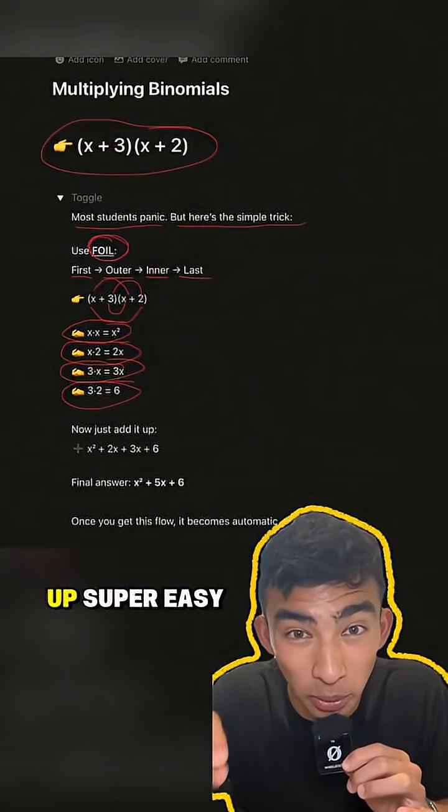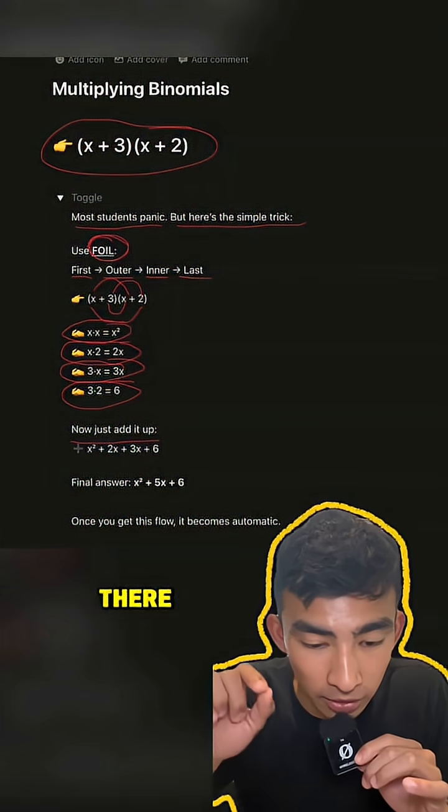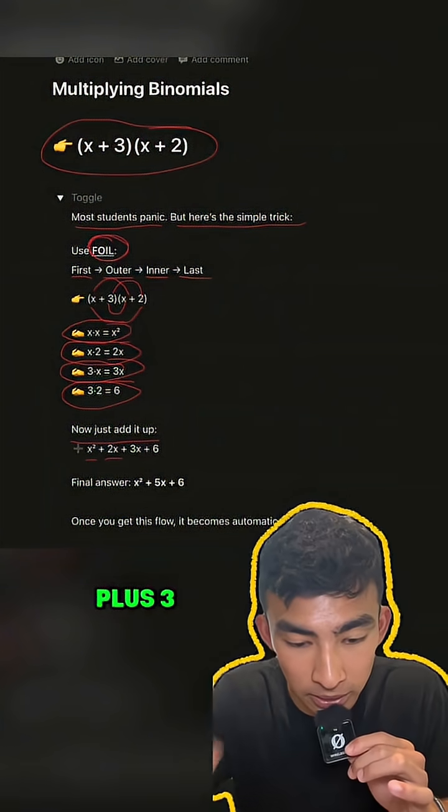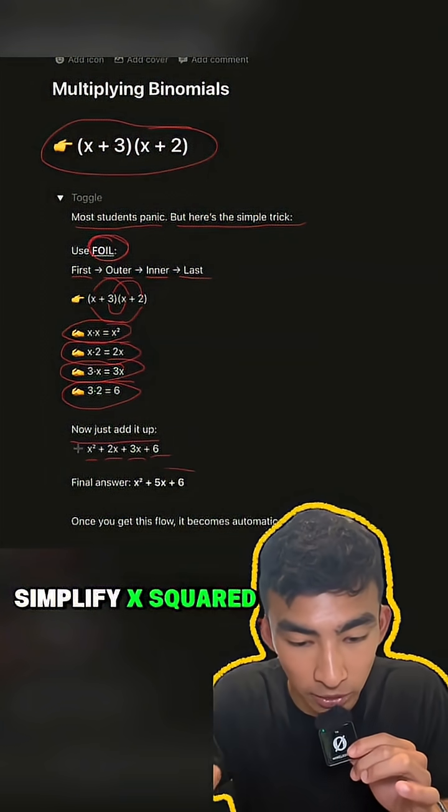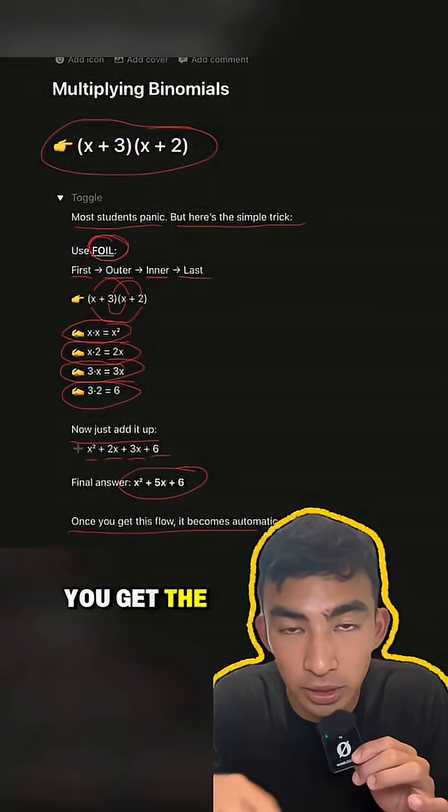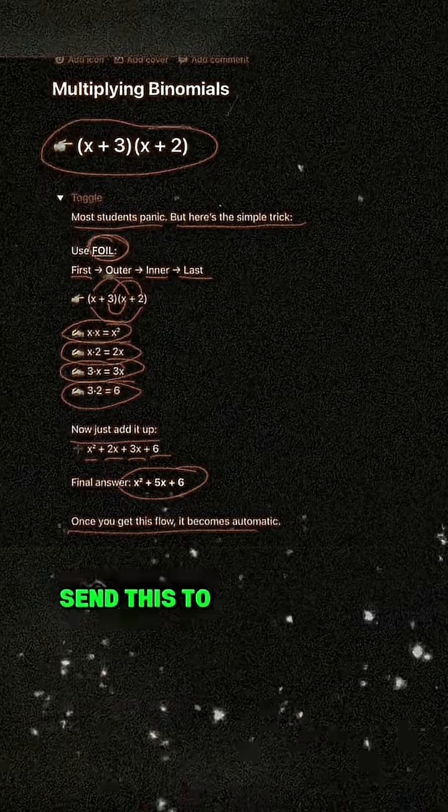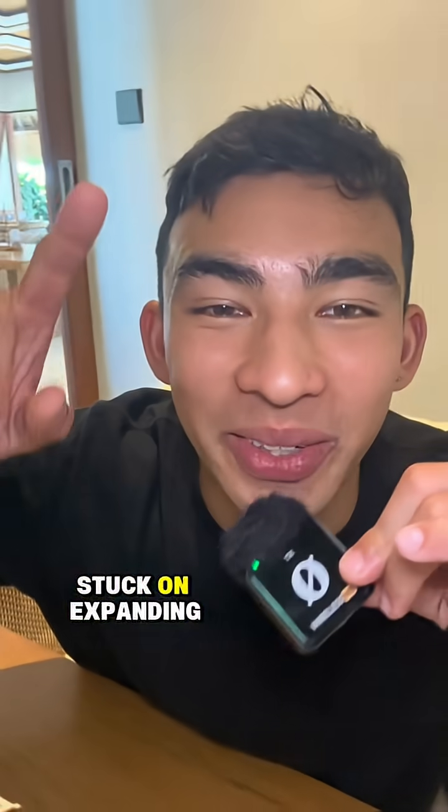Then we just add it all up super easy here. That's going to give you x squared plus 2x plus 3x plus 6. Simplify: x squared plus 5x plus 6, and then once you get the flow of this it becomes automatic. Send this to a mate who always gets stuck on expanding brackets.